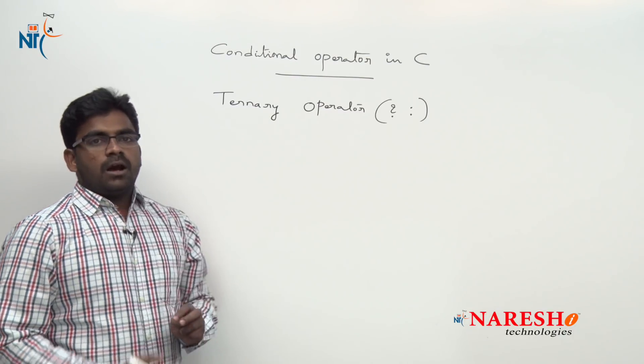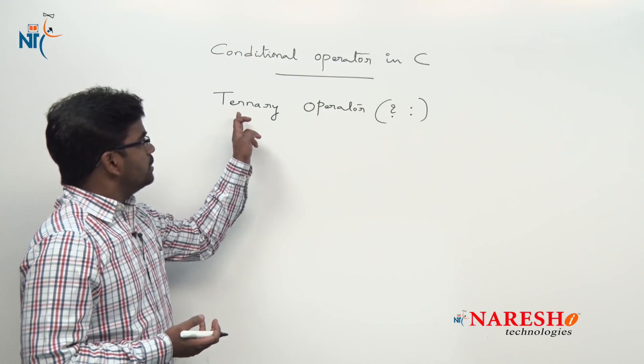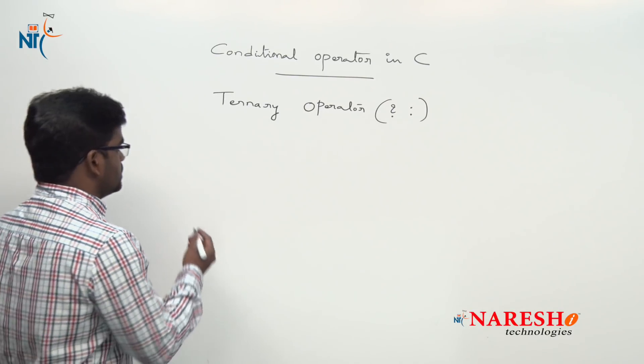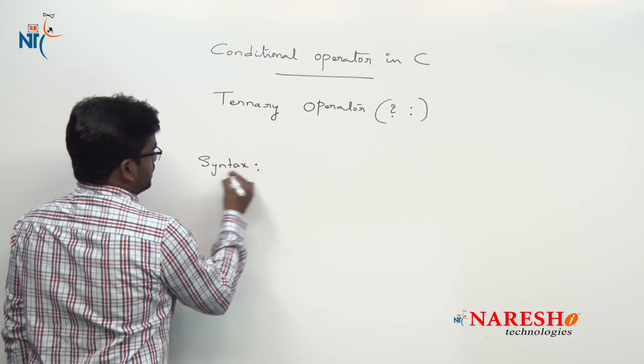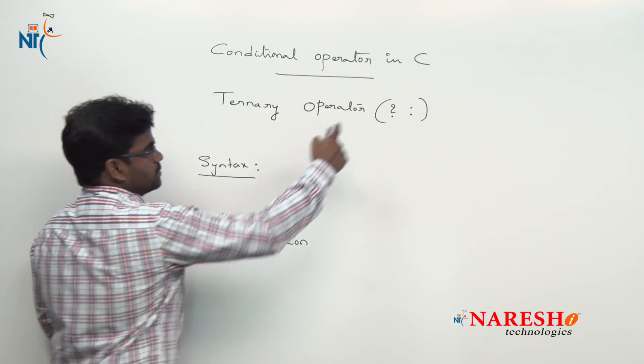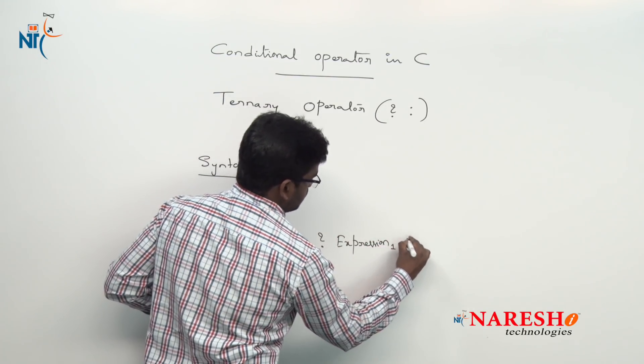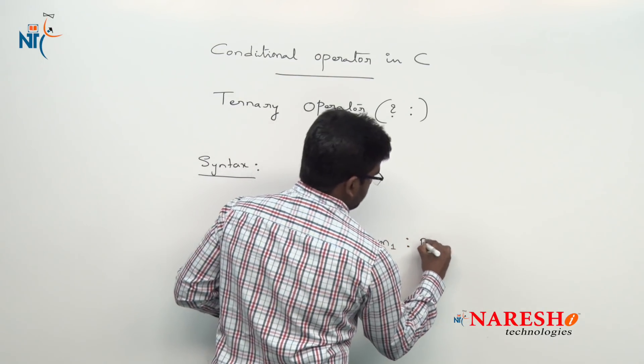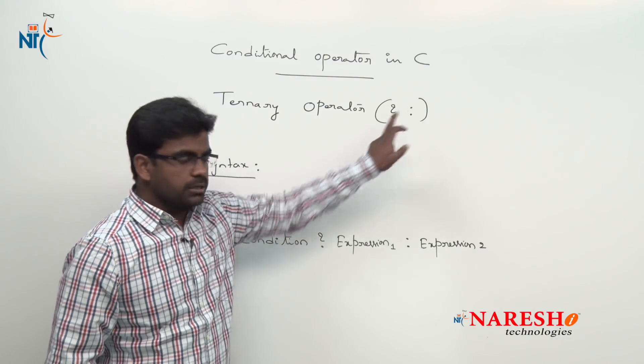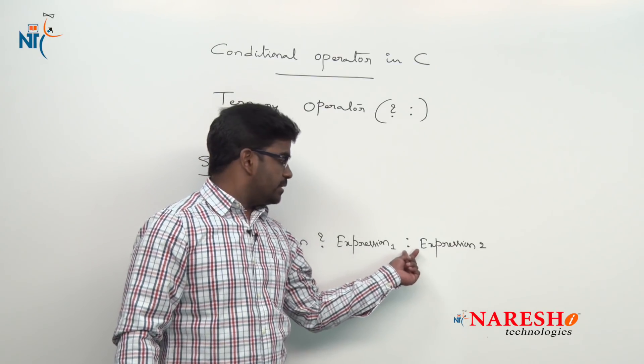How to use a ternary operator in the program and what are the three operands it will use to process the data? This is the syntax of ternary operator. First one is a condition, next one is a question mark, expression one, colon, expression two - three operands. Question mark and colon. It is a question mark followed by the condition and two expressions separated with a colon.